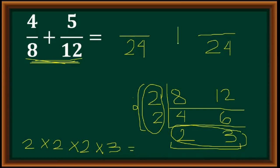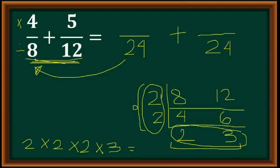Next, just copy the operation. You're going to divide the LCD by the first given's denominator, then multiply it to the numerator. So 24 divided by 8 is 3, times 4 is 12. And then 24 divided by 12 is 2, times 5 is 10.